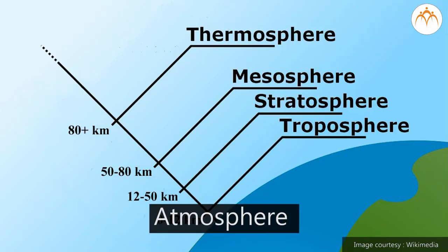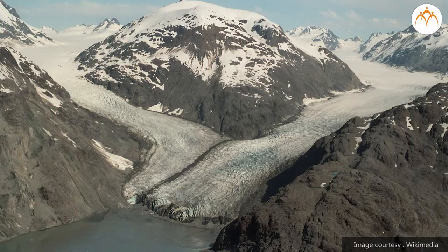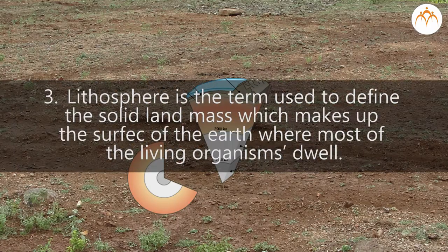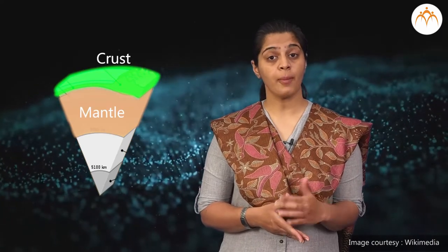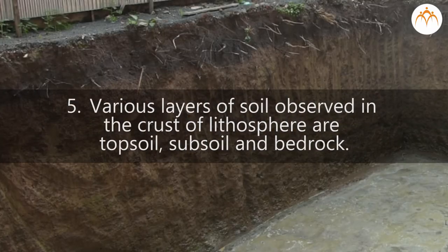Let us quickly revise some important points covered in this chapter. 1. Atmosphere refers to the envelope of various gases present around the surface of the earth. 2. Hydrosphere comprises of the water present in various water bodies such as oceans, seas, rivers, lakes, glaciers, and ice caps or snow mountains on the planet earth. 3. Lithosphere is the term used to define the solid land mass which makes up the surface of the earth where most living organisms dwell. 4. The two main layers of lithosphere are crust and upper mantle. 5. The various layers of soil observed in the crust of lithosphere are topsoil, subsoil, and bedrock.